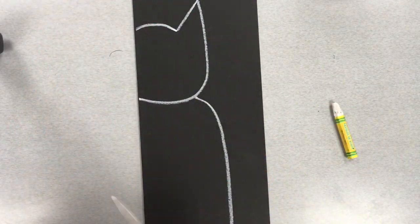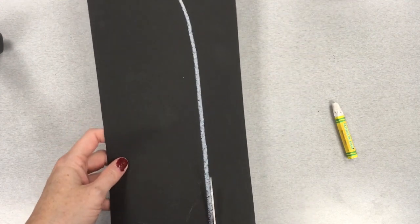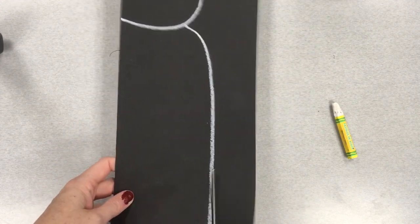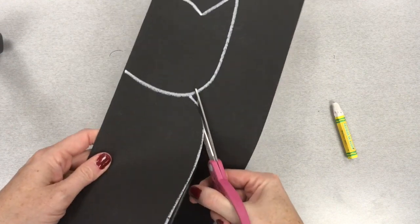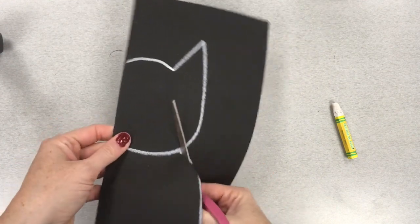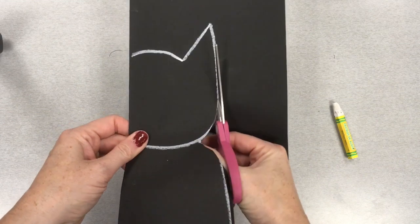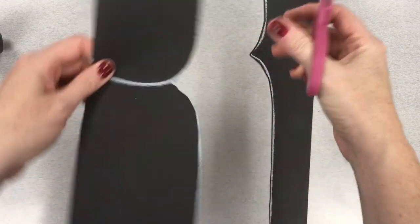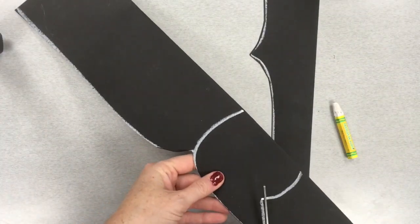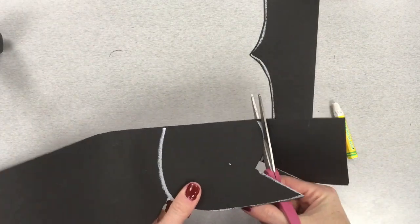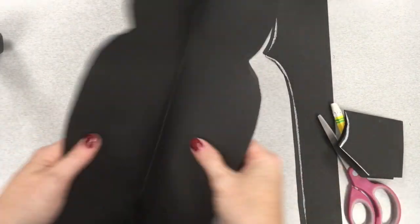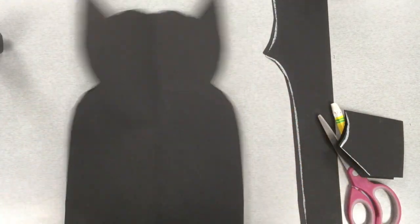Now take a pair of scissors and cut along the line that you just drew. Don't cut the center of the paper. Just cut that white line on the edge that you drew. Follow it going all the way up. Use one hand for cutting and one hand for turning the paper. And open up your paper.